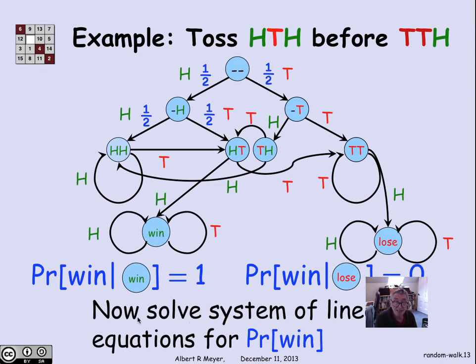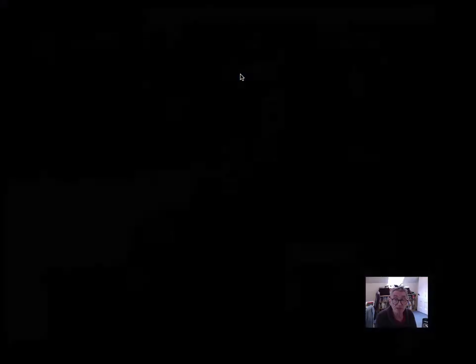And overall, I simply have this system of linear equations for the probability of winning in one state given other states. And I can solve these linear equations to find the probability of winning in the start state, which is simply the probability of winning.